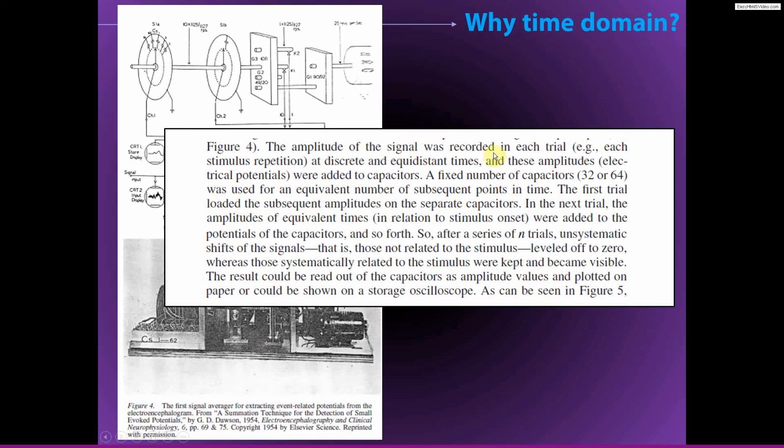This is a screenshot of the figure legend describing how the machine works. So the amplitude of the signal was recorded in each trial, each stimulus representation, at time points, equidistant, and these amplitudes were added to capacitors, so physical capacitors. A fixed number of capacitors was used for an equivalent number of time points. And so this means that the sampling rate of the data was defined by the number of capacitors that you had built into this machine. It's quite remarkable. Now the first trial loaded the subsequent amplitudes. These are the EEG amplitudes on each separate capacitor. In the next trial, the amplitudes of equivalent times relative to stem onset were added to the potentials of each of the capacitors. And so after a series of N trials, unsystematic shifts of signals leveled off to zero. And those systematically related to the stimulus, which are the event-related potentials, were kept and became visible. They could be read out of the capacitors and plotted on paper or shown on an oscilloscope.